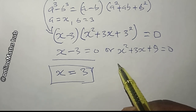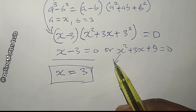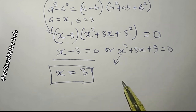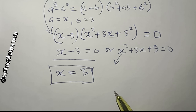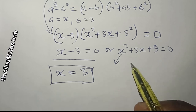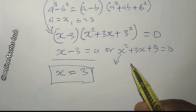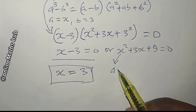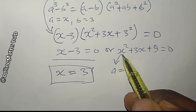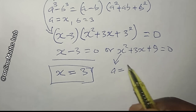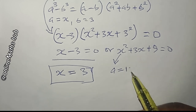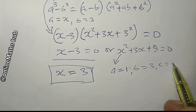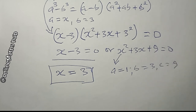Now I'll solve x² + 3x + 9 = 0 to get the remaining two values of x. I'll use the quadratic formula. Here a, the coefficient of x², is 1; b, the coefficient of x, is 3; and c, the constant, is 9.